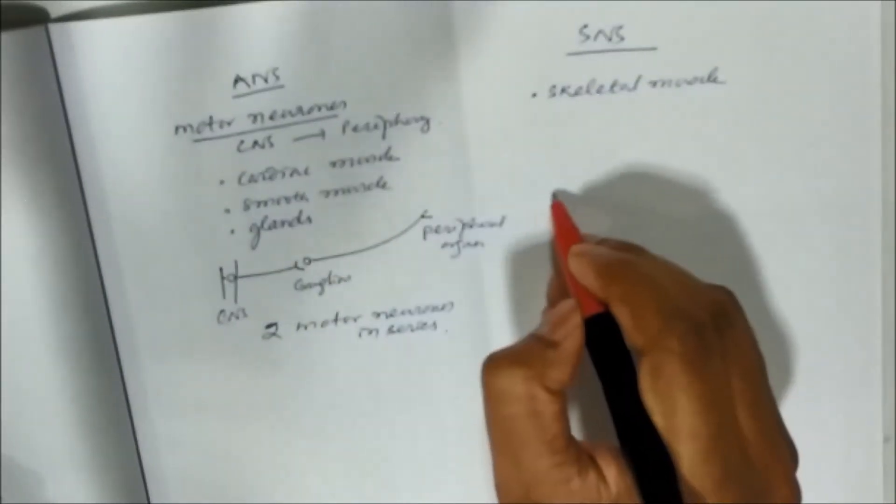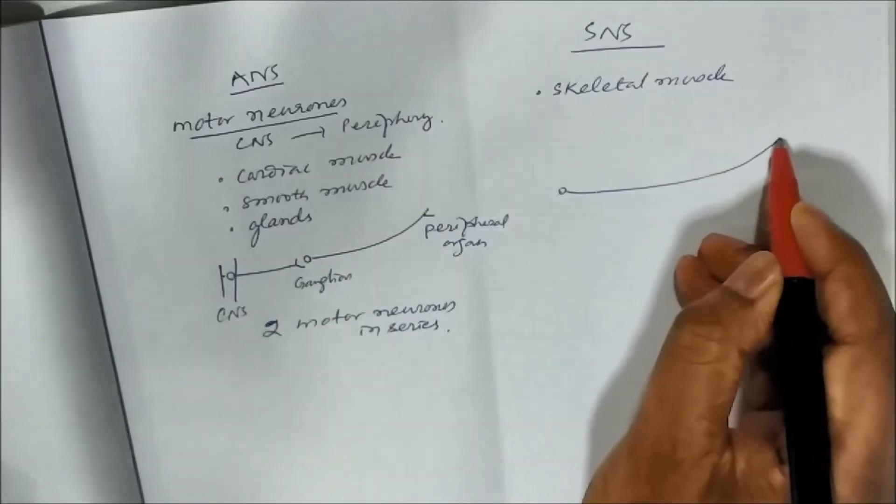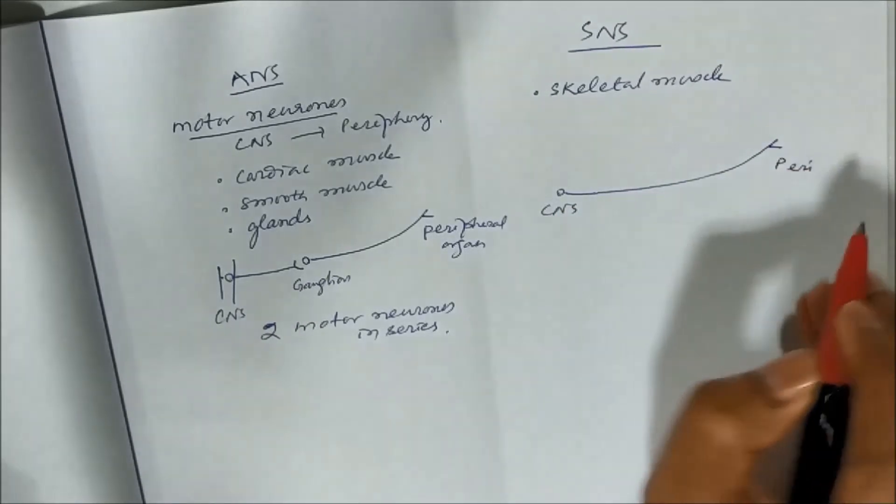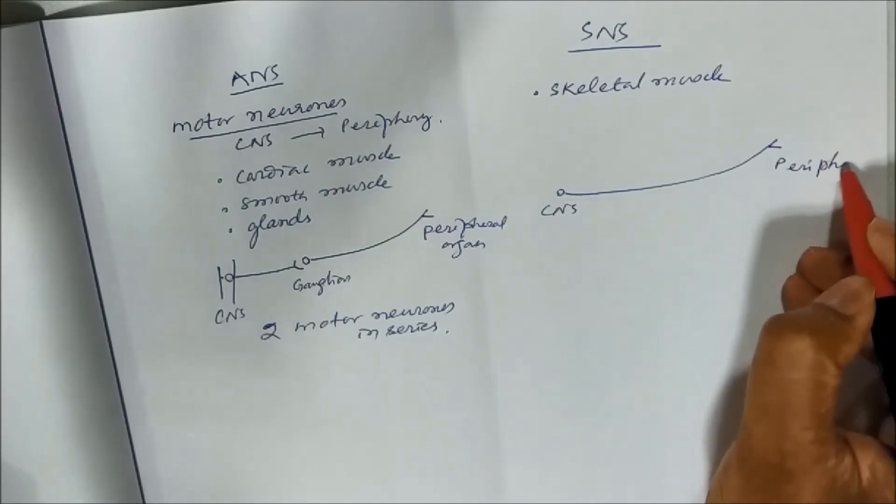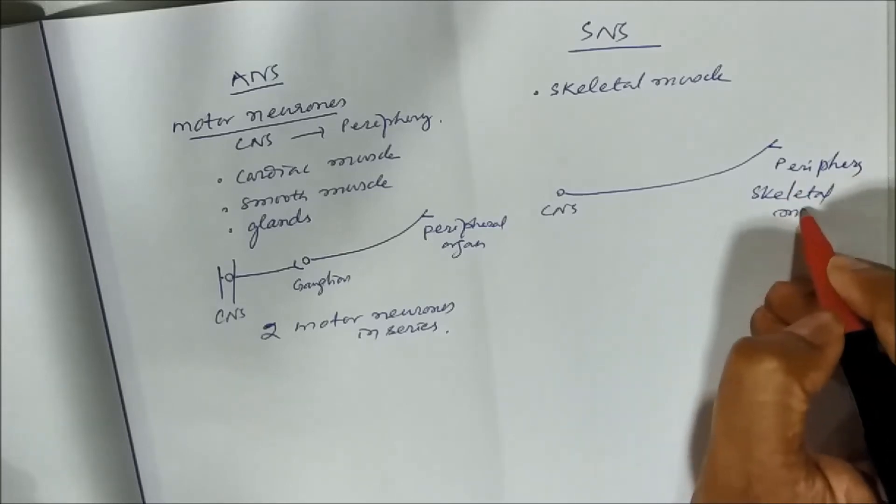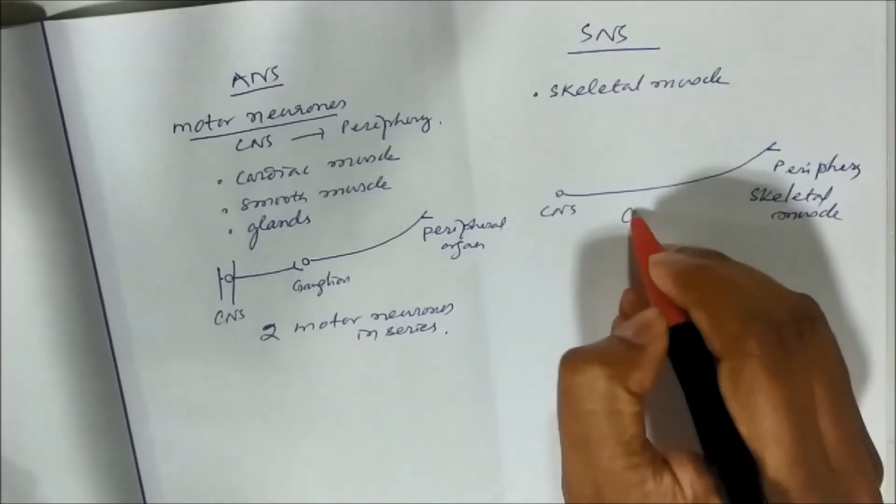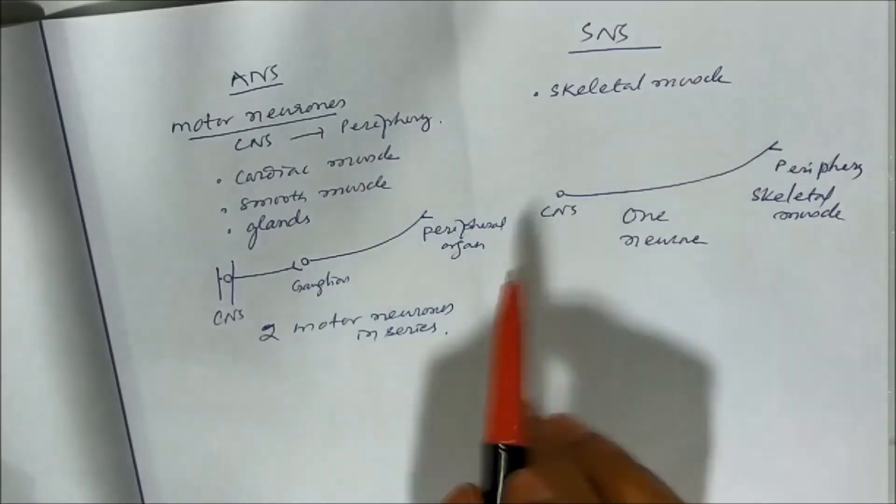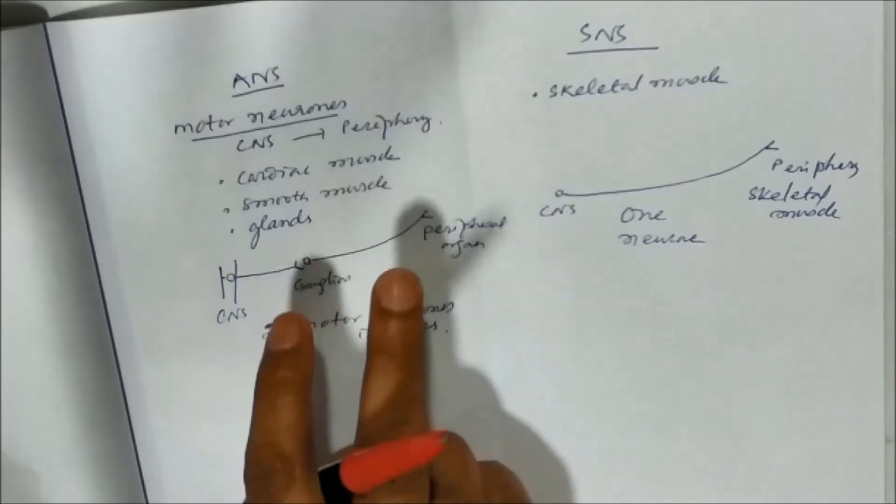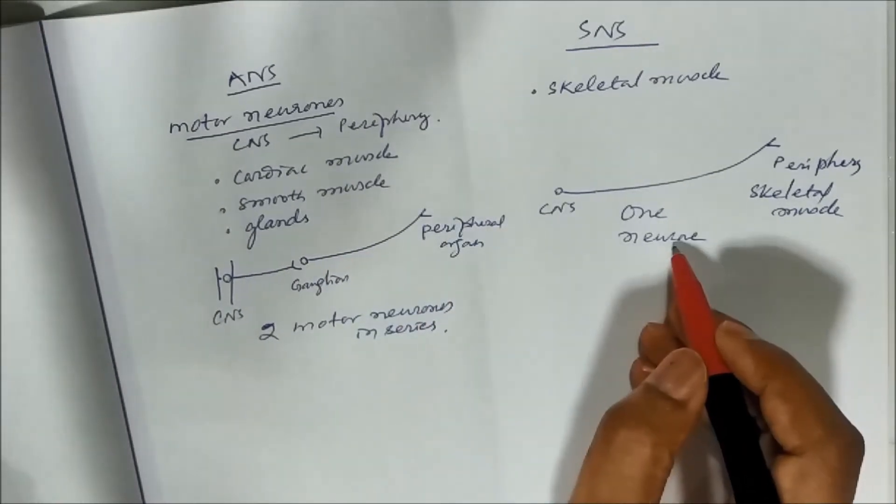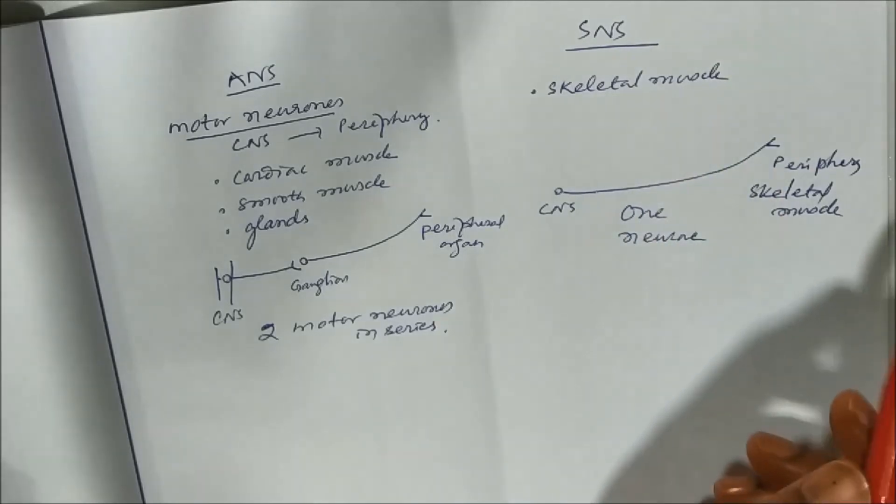Whereas a single somatic neuron from CNS to periphery. Periphery means here the skeletal muscle, is only one neuron. This is a major difference between ANS and SNS. Two motor neurons in series in case of ANS. One motor neuron in case of SNS.